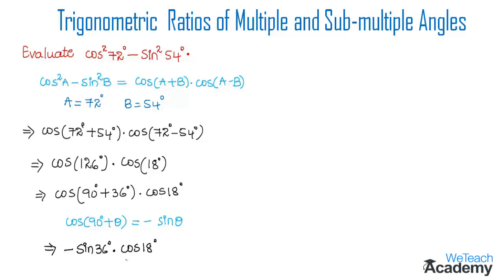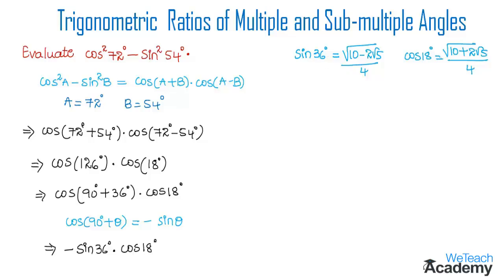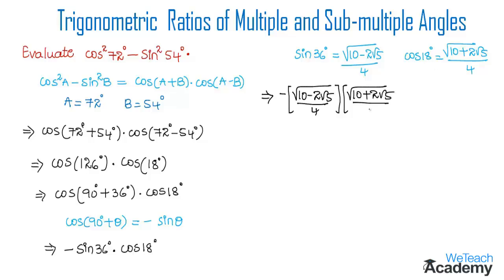Using the values of sin 36° and cos 18°, which we already proved in our previous videos: sin 36° = √(10 - 2√5) / 4, and cos 18° = √(10 + 2√5) / 4. Substituting these values, we get -[√(10 - 2√5) / 4] · [√(10 + 2√5) / 4].